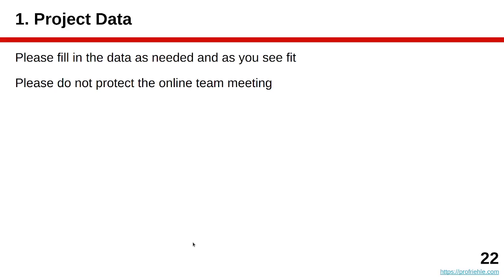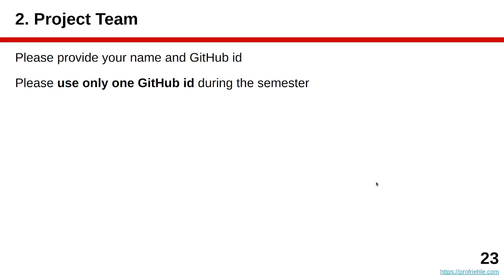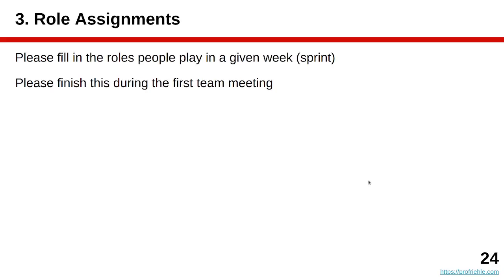For now, just fill in the project data: who is your team, what's your GitHub ID, et cetera. There should be a link to your online team meeting in the planning document — we need that link to find you, since we participate in your team meeting. Do not hide the Zoom link or protect the meeting; make it open so we can join. Different people from the professorship will join over time, so don't expect always the same person.